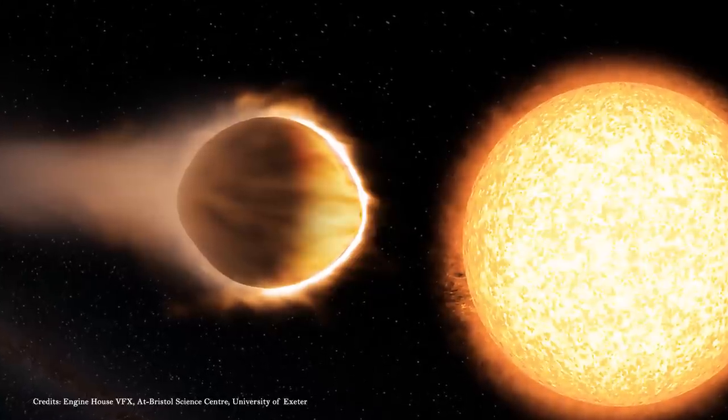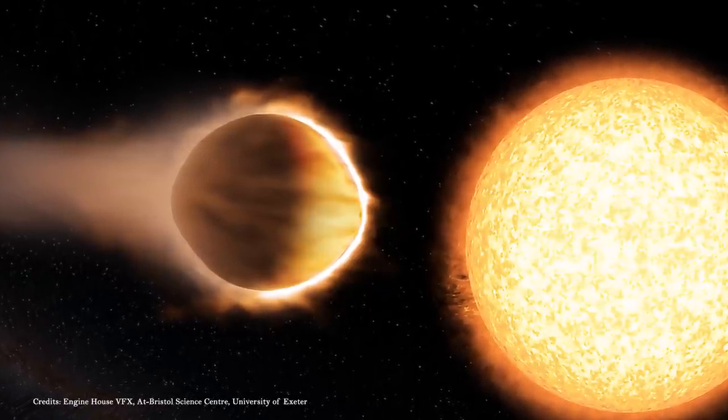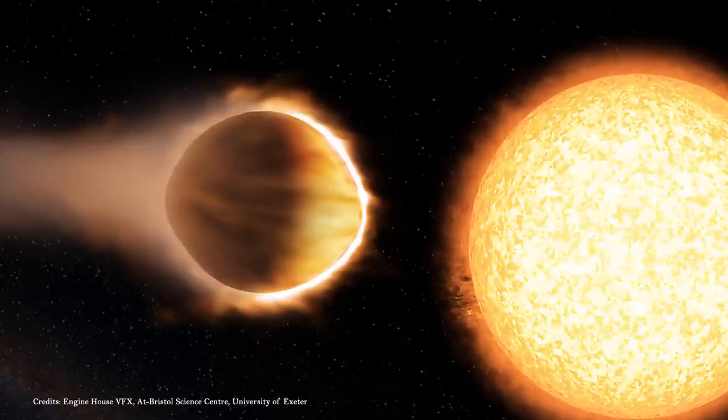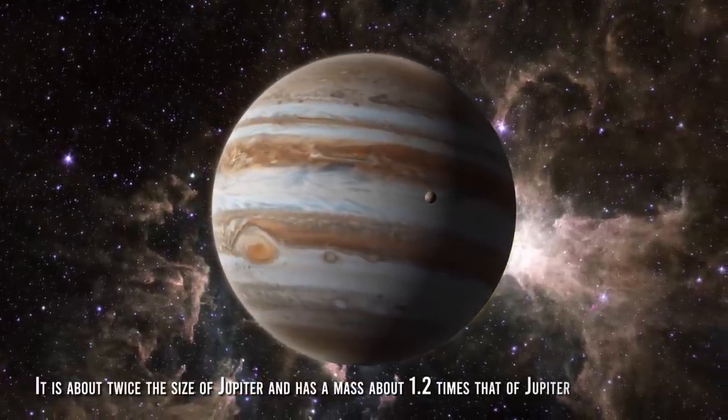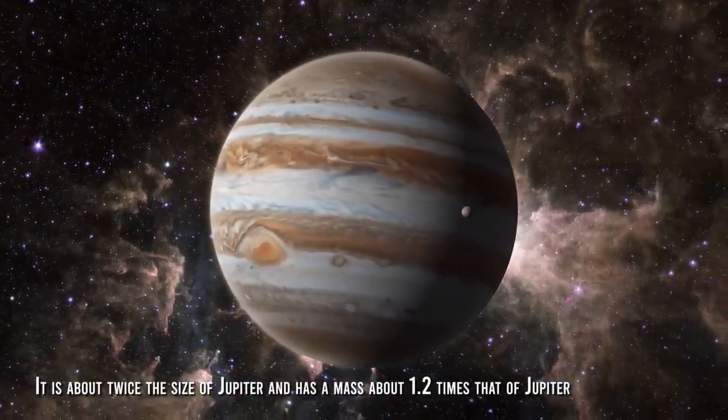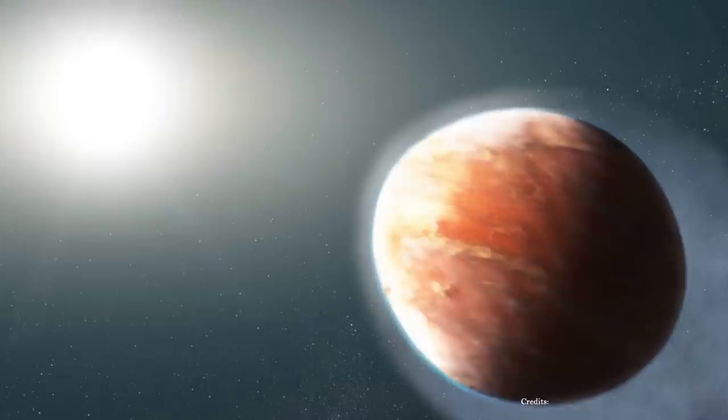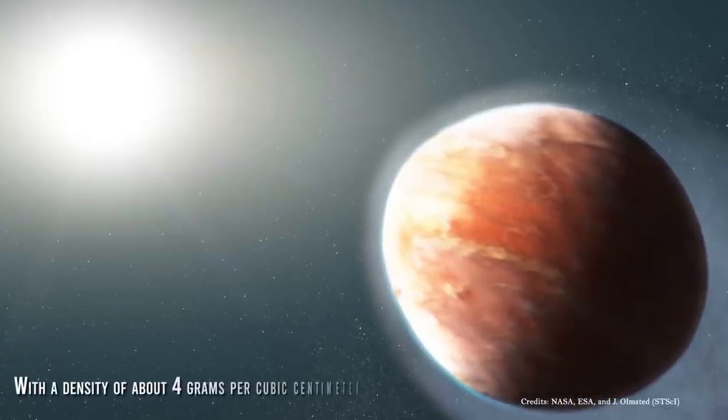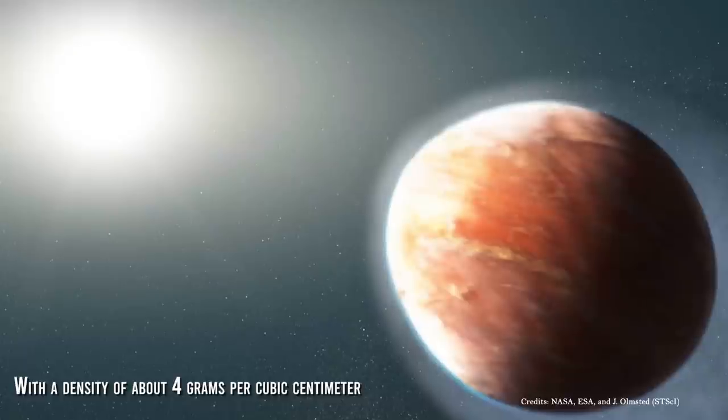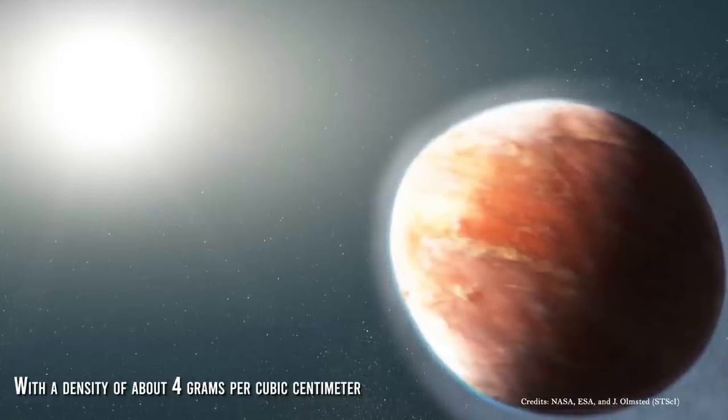In addition to its metallic clouds, WASP-121b is also notable for its extreme size and mass. It is about twice the size of Jupiter and has a mass about 1.2 times that of Jupiter. This combination of size and mass makes WASP-121b one of the densest known exoplanets, with a density of about 4 grams per cubic centimeter.